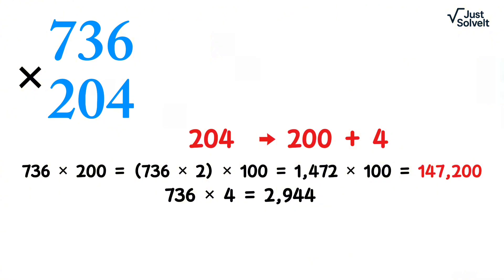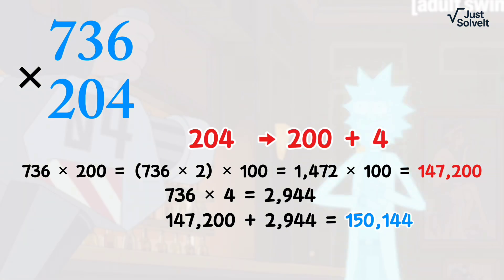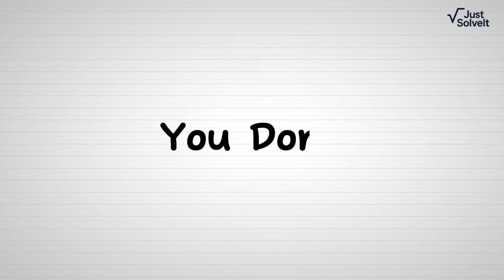736 times 4 equals 2,944. Now add. 147,200 plus 2,944 equals 150,144. Without stacking numbers, you've done a full three-digit multiplication in your mind.